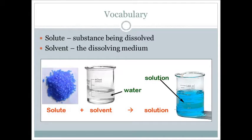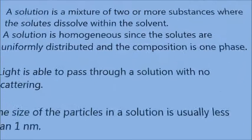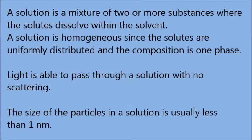A solution is made up of solute and solvent. A solute is the substance being dissolved, while the solvent is the dissolving medium. In this example, the solute is copper sulfate and the solvent is water, combined to form a light blue solution. A solution is a mixture of two or more substances where the solutes dissolve within the solvent. A solution is homogeneous since the solutes are uniformly distributed and the composition is one phase.